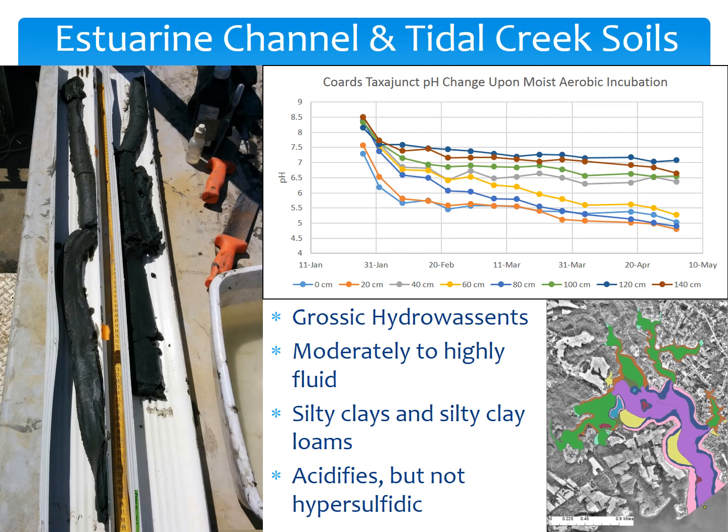In the deeper water — in the coves, the central channel, and the tidal creeks — we have estuarine channel and tidal creek soils. These are grossic hydrowassents — subaqueous soils where 'hydro' means they're moderately to highly fluid, and 'grossic' means that material is thick. For classification purposes we only need a meter of it, but the deepest we've gone in some of these is five meters and we haven't reached the bottom in some areas, so it is quite a thick deposit. These are silty clays and silty clay loams in the Rhode River. They acidify, but they're not hypersulfidic — take a look at that pH diagram.